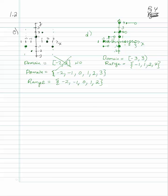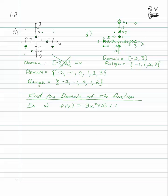Now, if you're given a function rule — an algebraic equation — the domain starts as all real numbers. Because if you can put in a number for x and plug it in, you'll get a y-value. For example, f(x) = 3x squared plus 5x plus 1: no matter what you put in, you get a number out. So the domain is all real numbers, or in interval notation, (-∞, ∞).